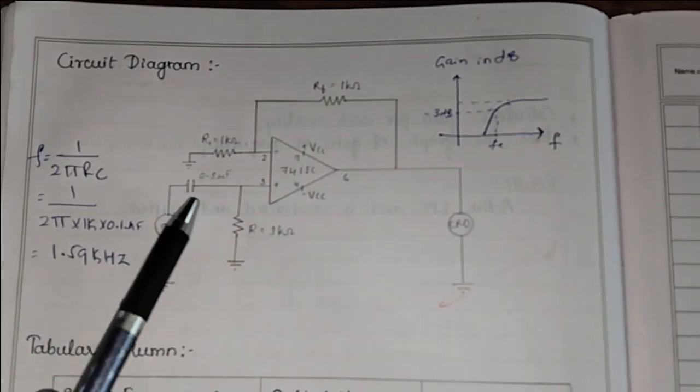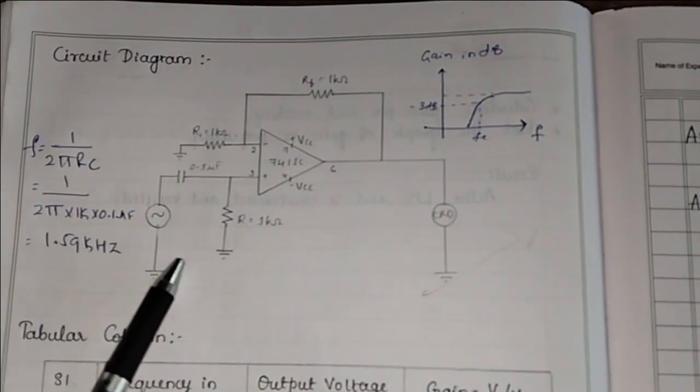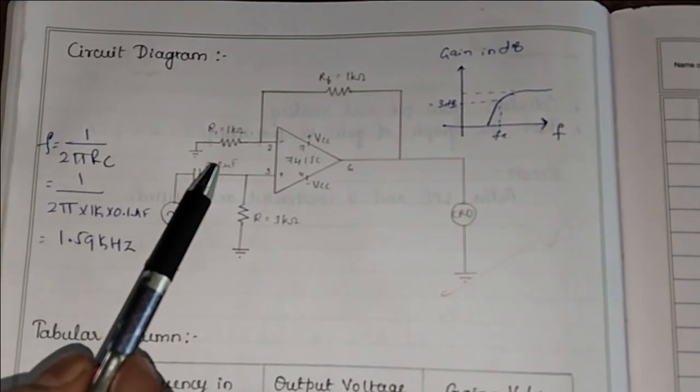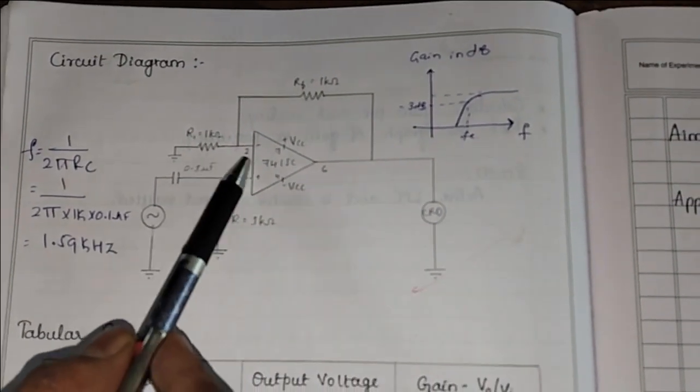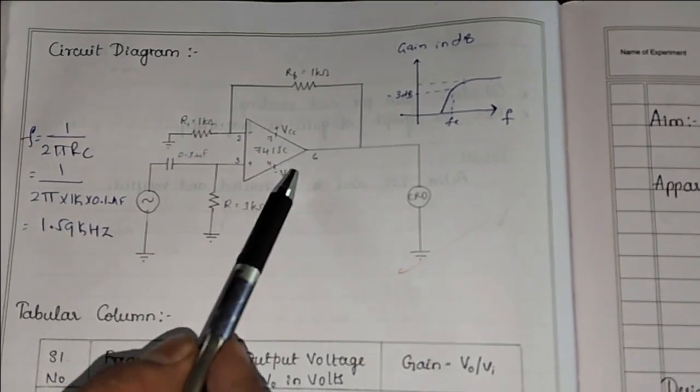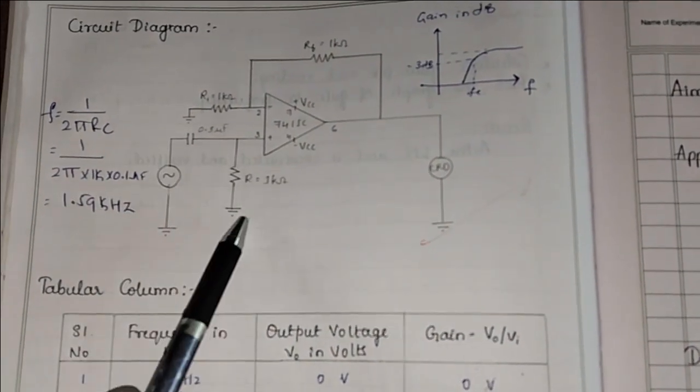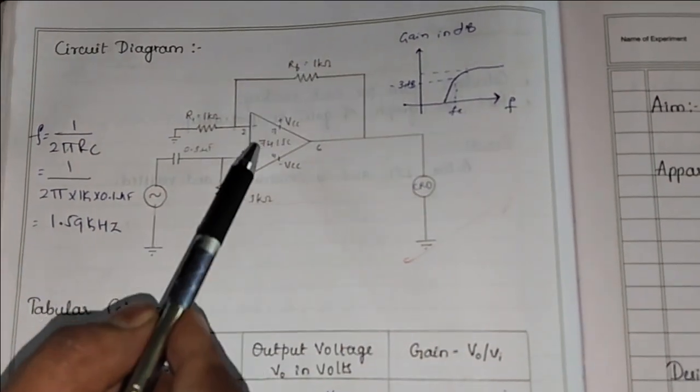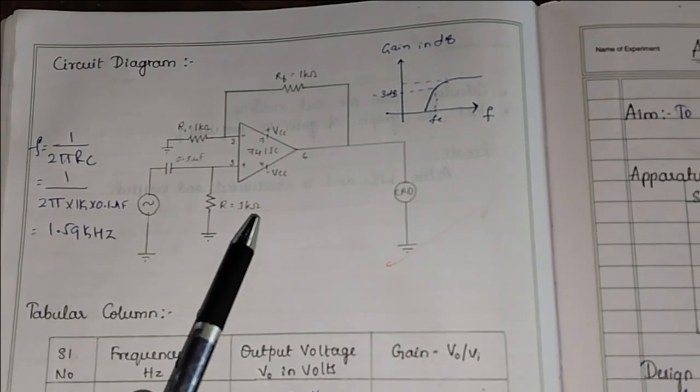Both this capacitor and resistor form the high pass filter. And the resistor R1 and RF and this op-amp IC act as non-inverting amplifier. Together this high pass filter and this amplifier forms the active high pass filter.